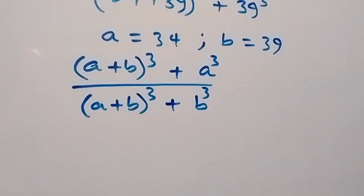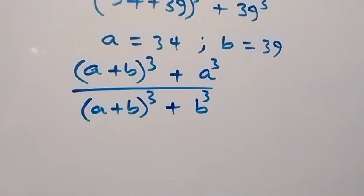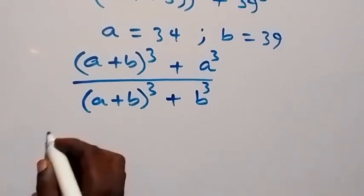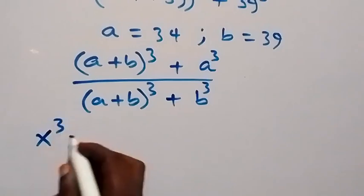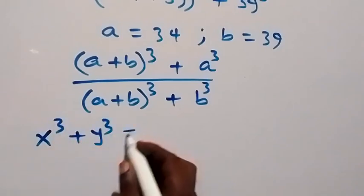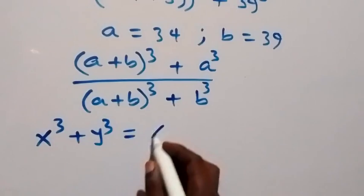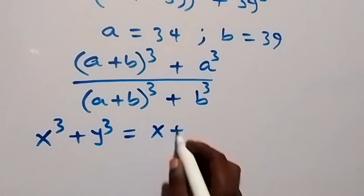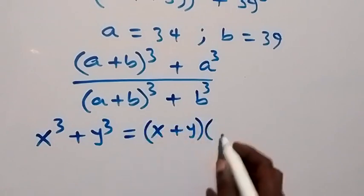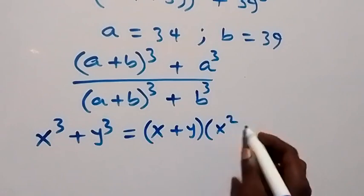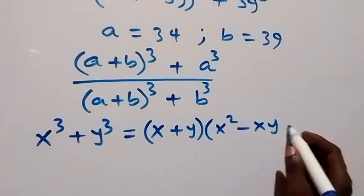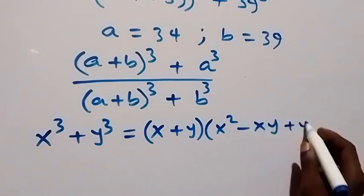Then we should recall the sum of two cubes: when we have something in the form of x cubed plus y cubed, this is the same thing as (x plus y) into bracket (x squared minus xy plus y squared).